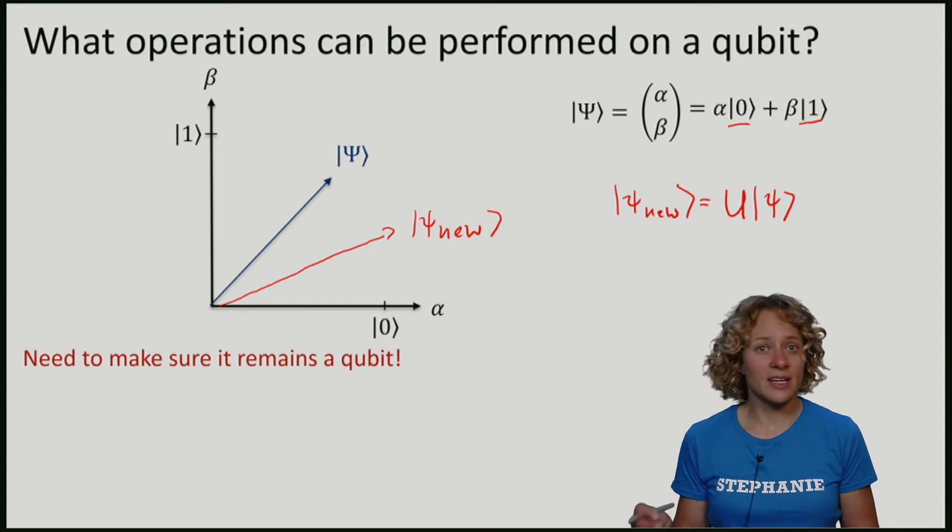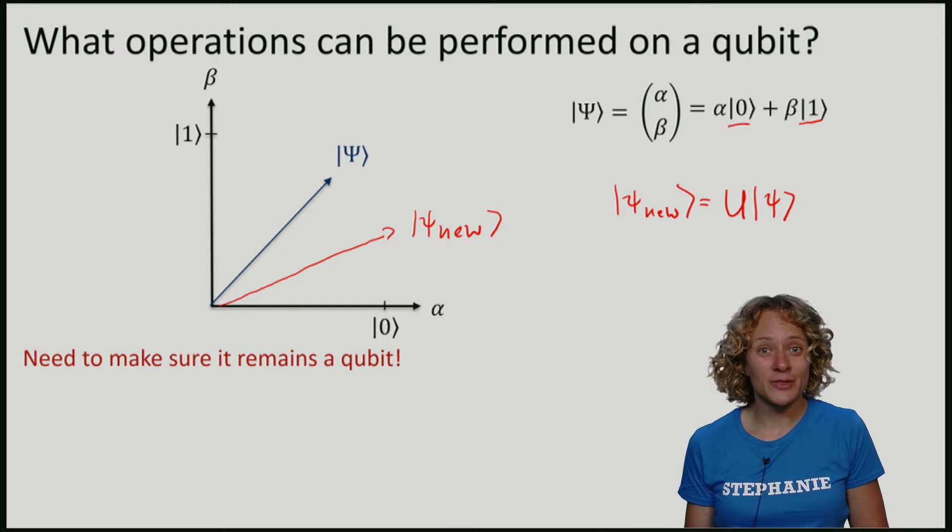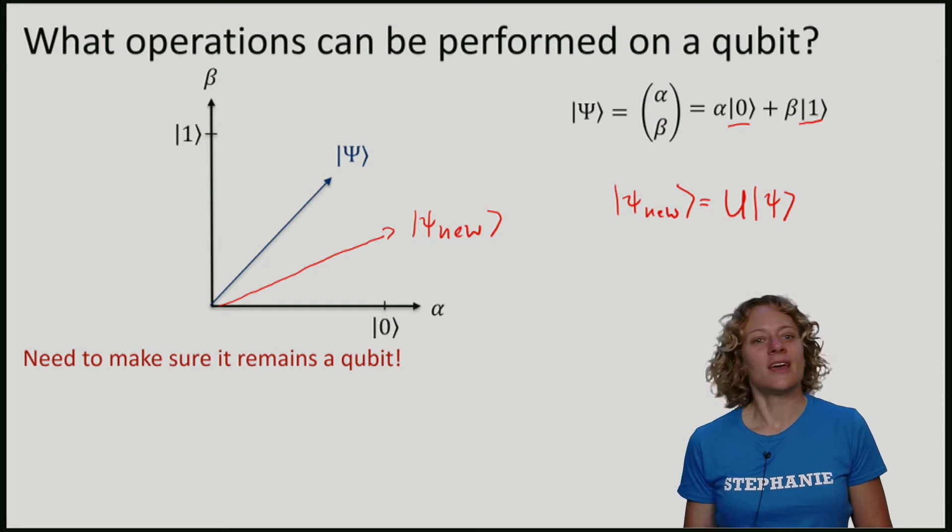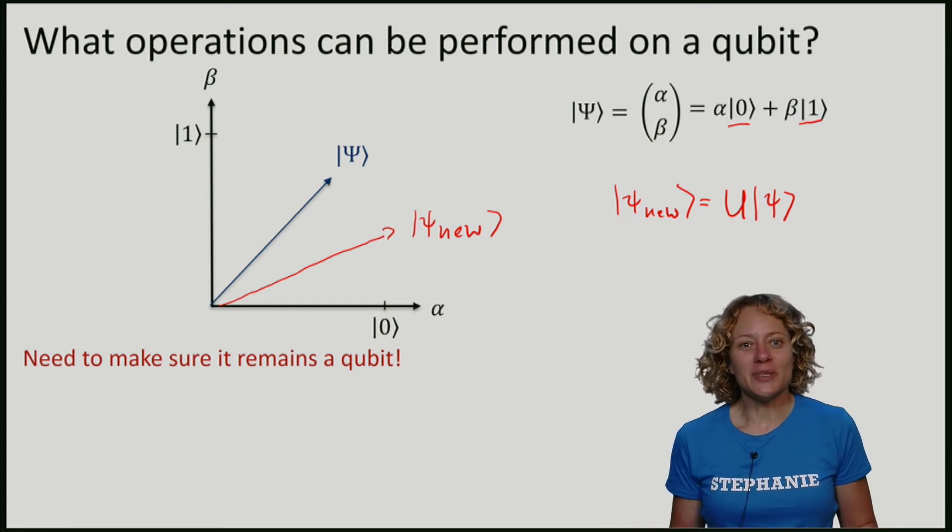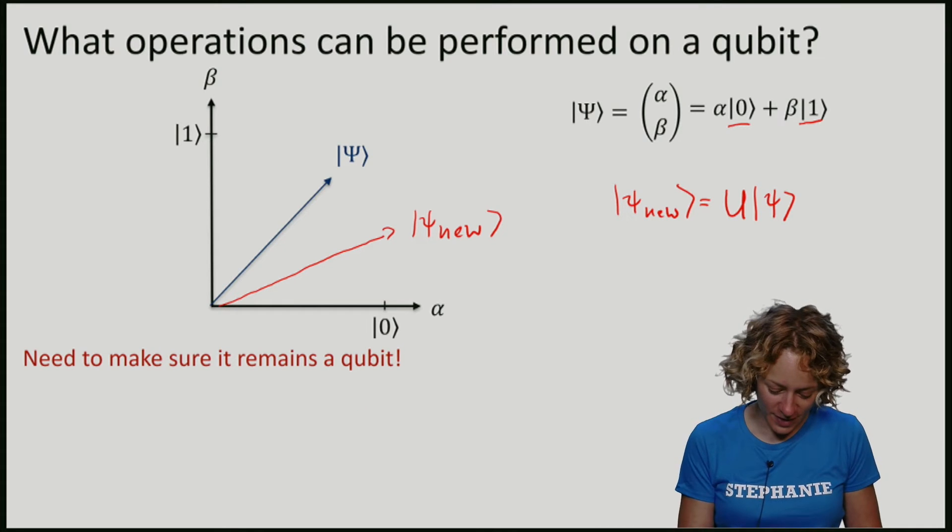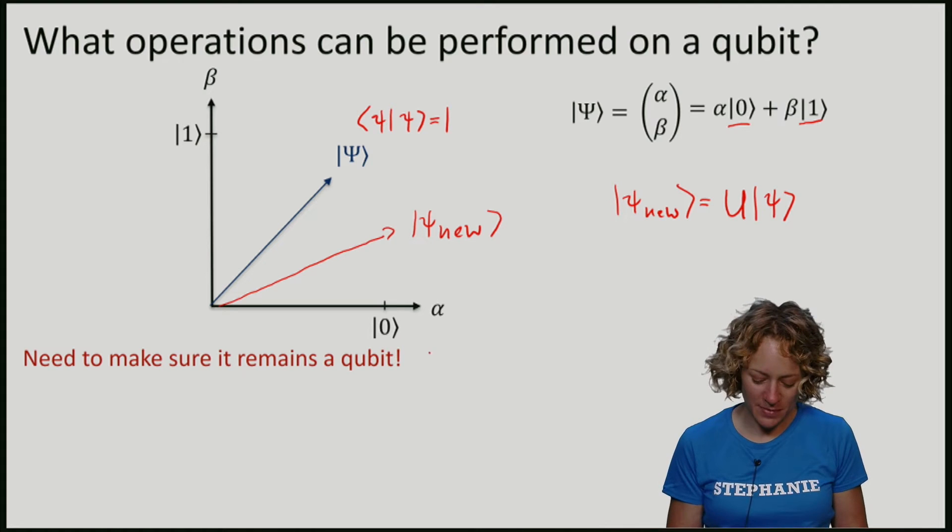The question is now, can we just put any matrix there? Or does this U have to satisfy certain properties? Remember that a qubit is of course a vector, but we wanted this vector to be normalized.